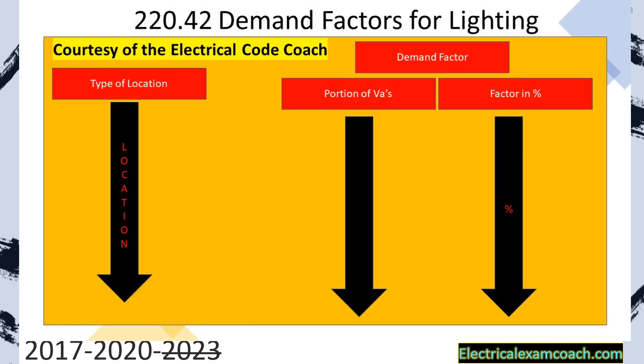When we get to table 220.42, we always read the black bold heading to make sure that we're in the right table and it says demand factors for lighting. Now you can ask the question if this is the three VAs per square foot — well, it includes receptacles, and you are correct. We are allowed to use this table for commercial lighting or any of the lighting in the following locations that we're getting ready to talk about.